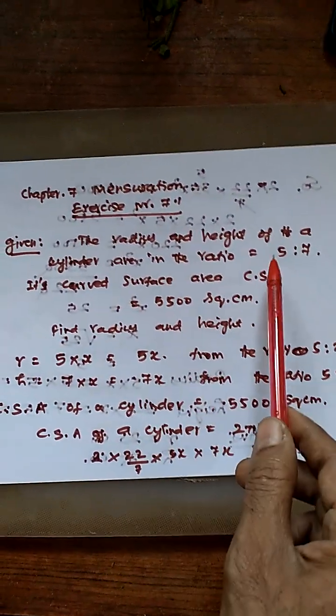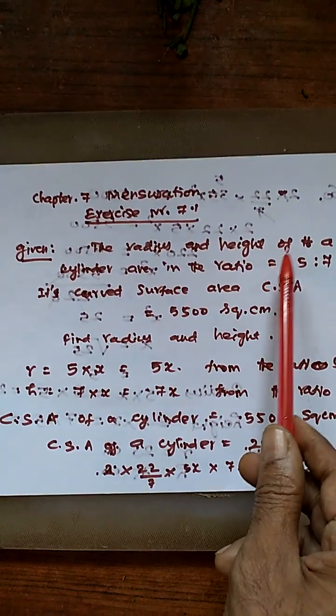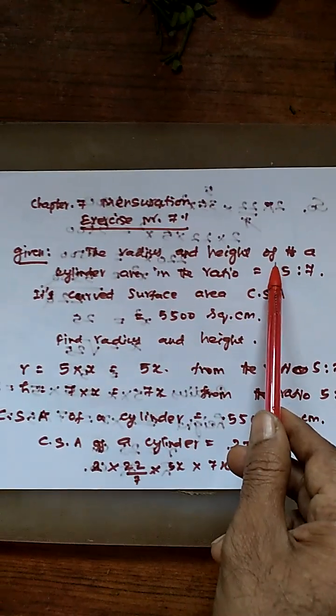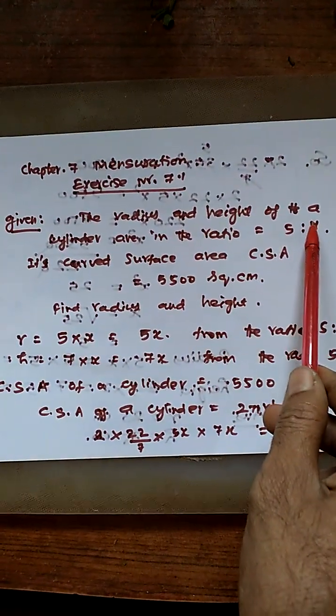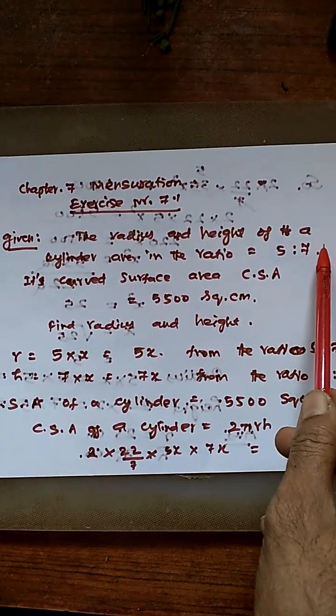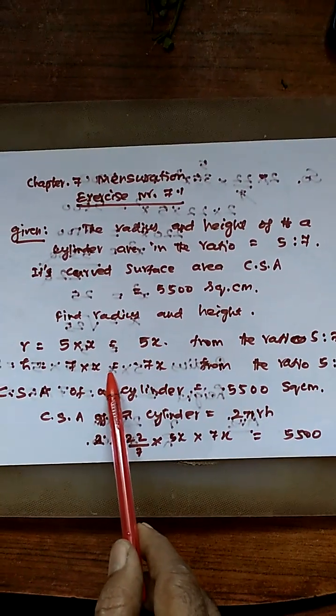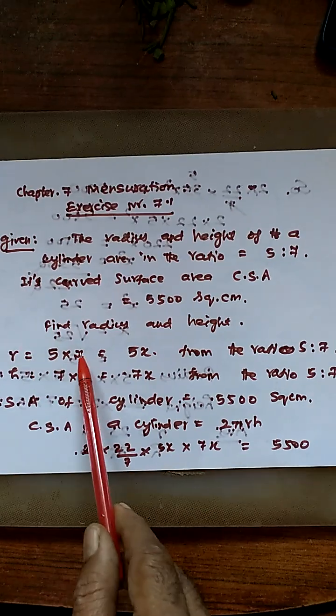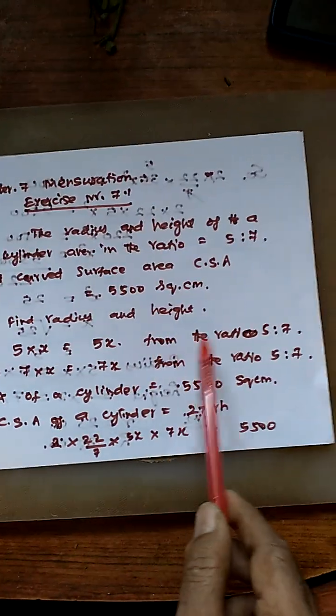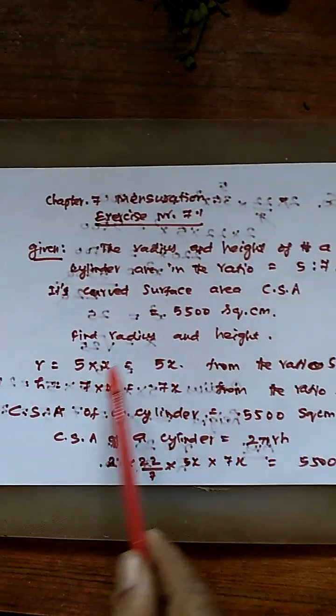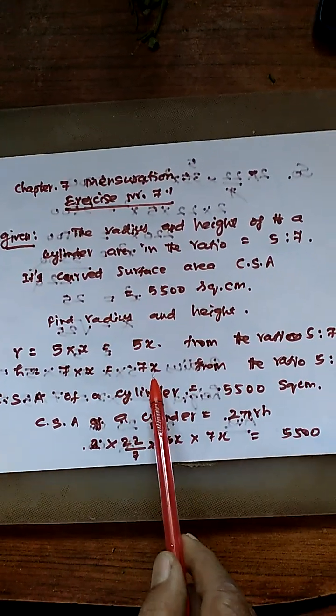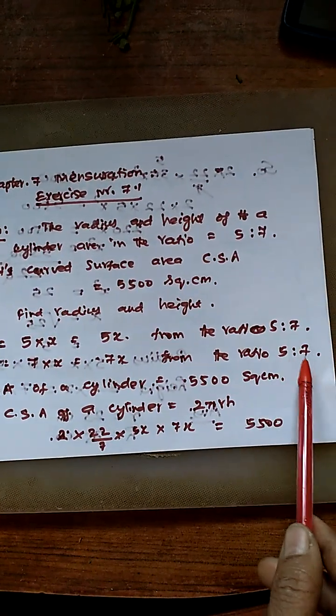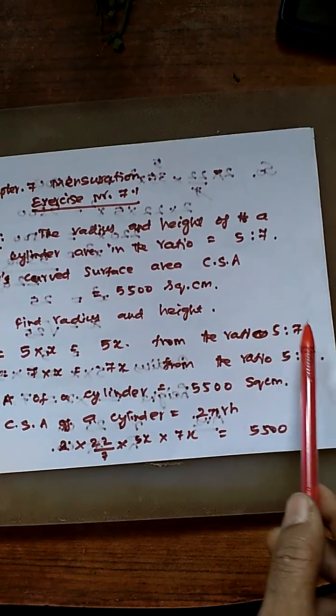Let each term be X. So R equals 5X and H equals 7X from the ratio 5 to 7. R is 5X, H is 7X. This is the radius and this is the height.